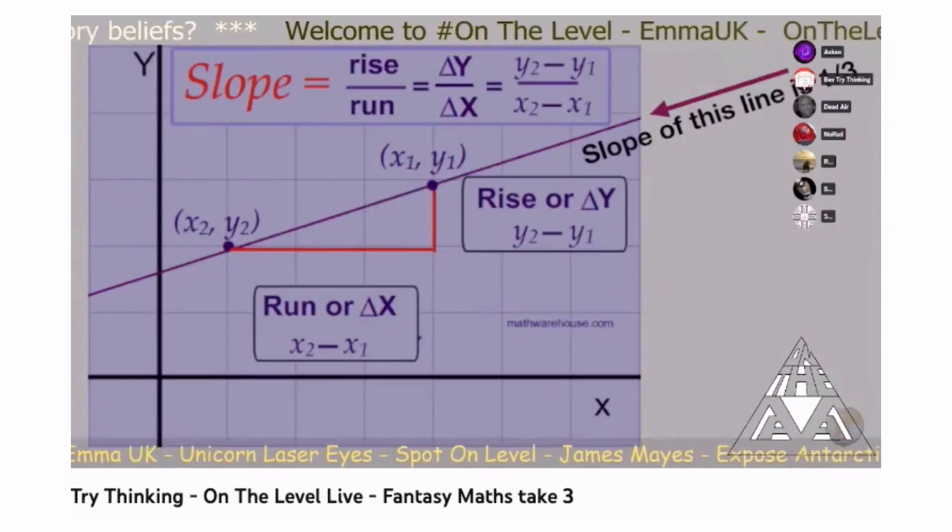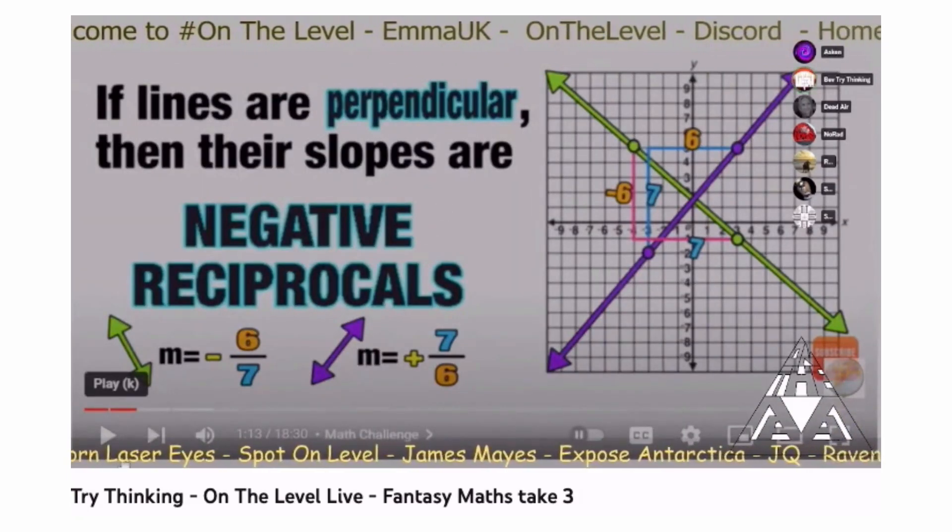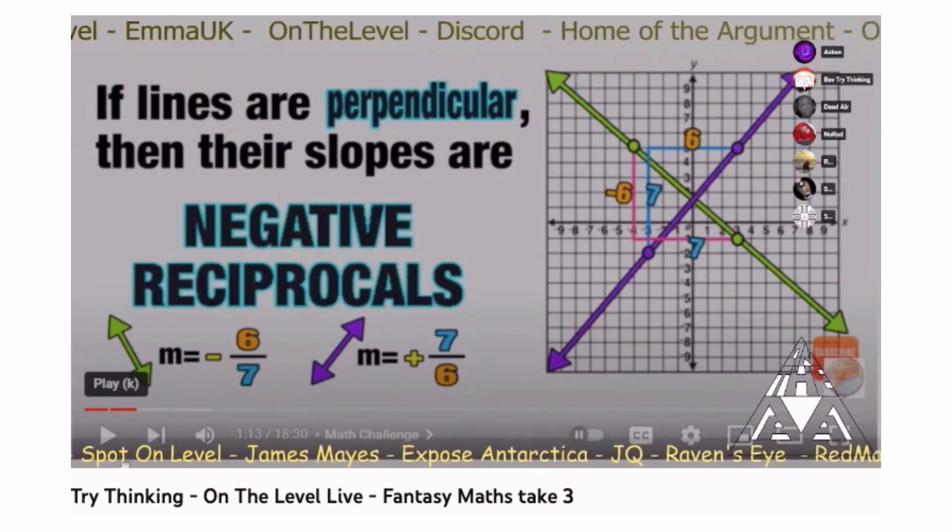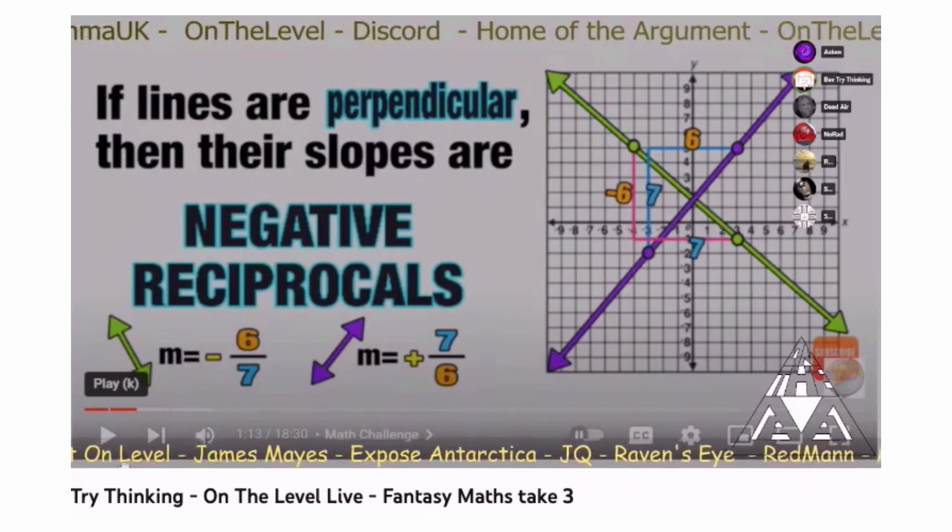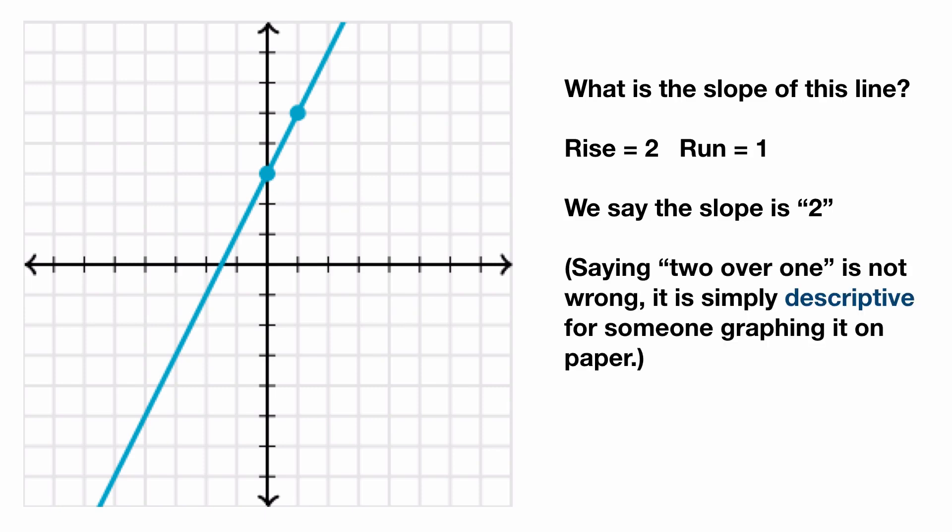The slope of this graph is one-third. It's one over three. Actually, it's one-third. But if you were to ask, what's the slope of this line? The rise is two and the run is one. What would you say, Bev? Because I would say the slope is two. Now, if you said two over one, that is not wrong. That's descriptive. But the value of the slope is two. It's a number.